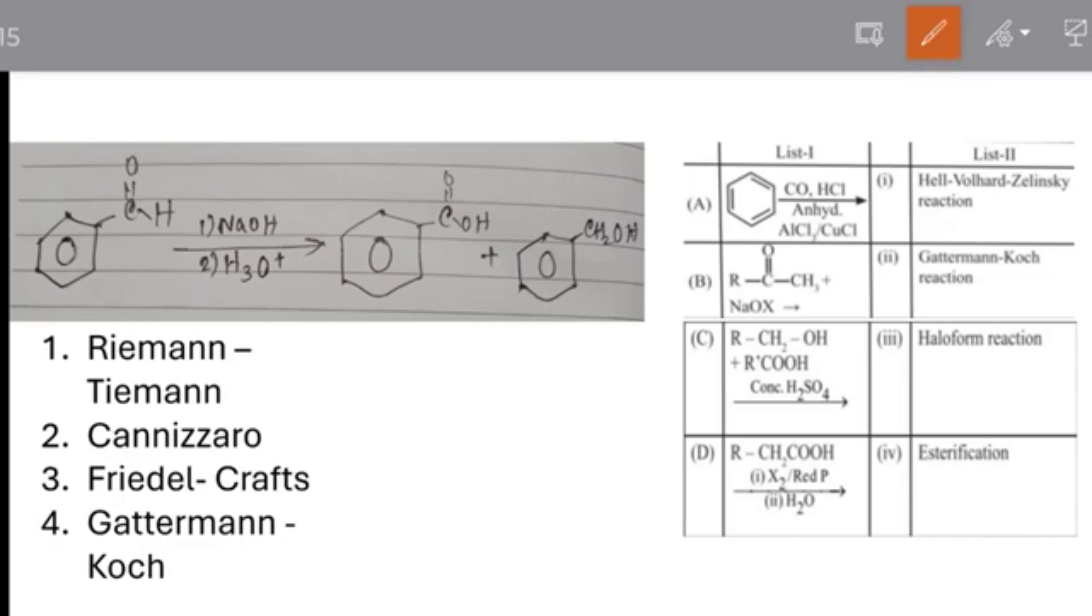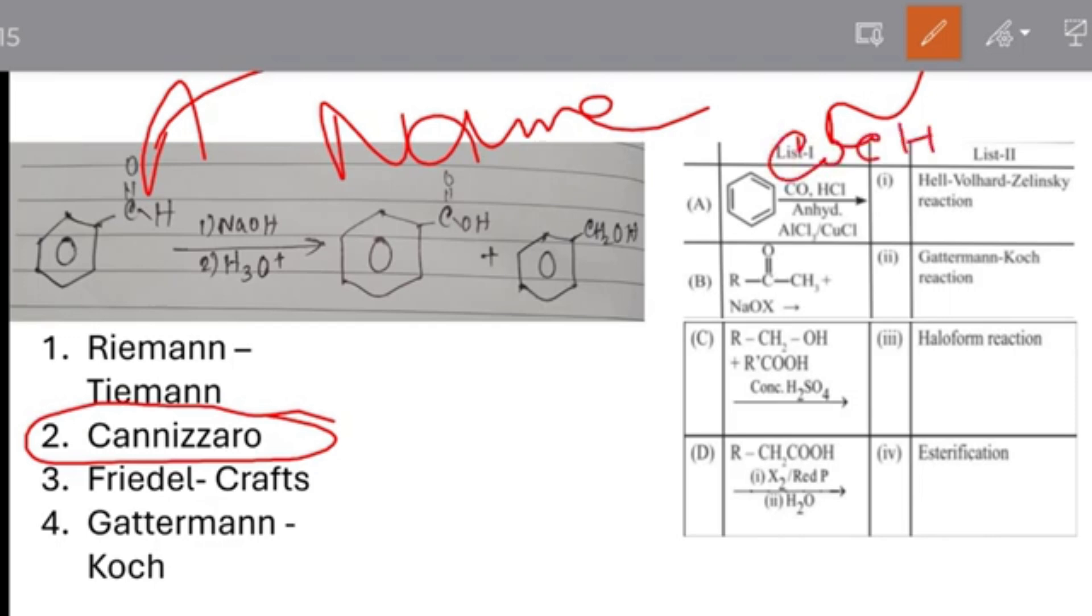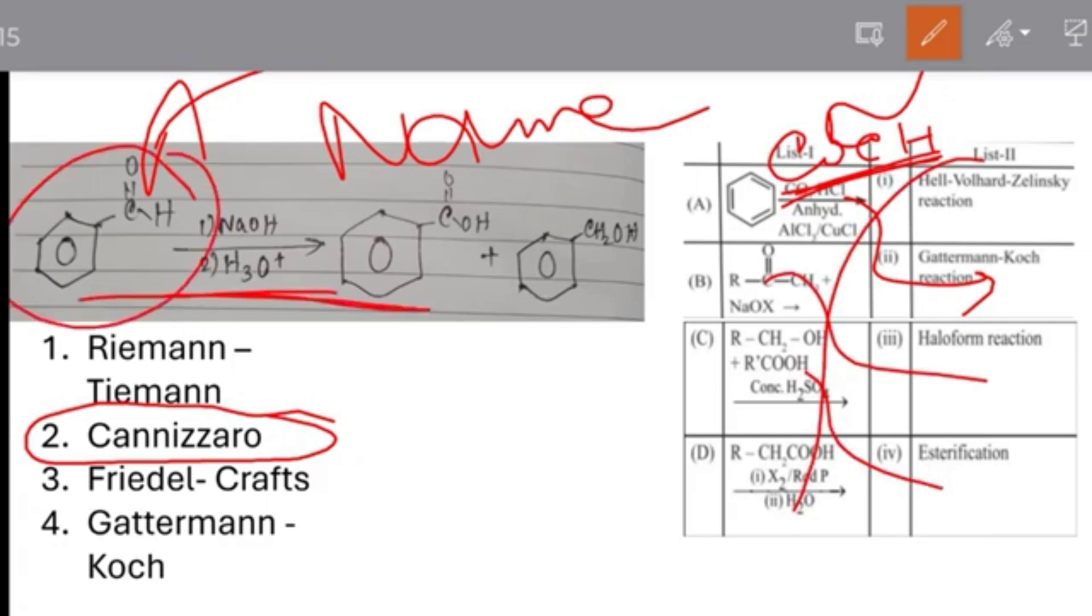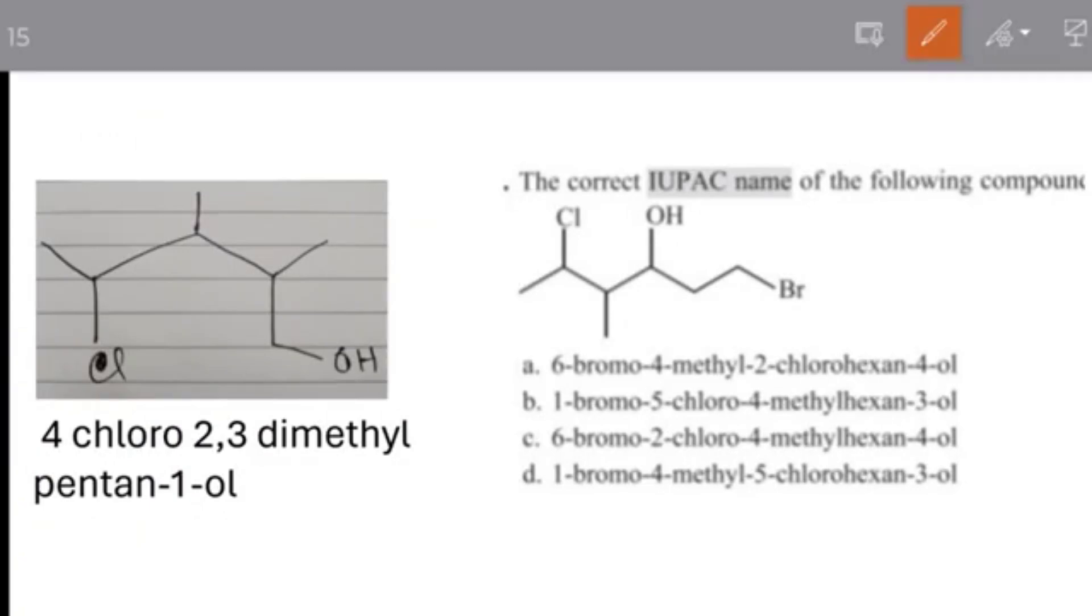See, this is a question - why name reactions are important. This is NEET PYQs, this is AIIMS Nursing PYQs, and this is a Cannizzaro reaction. Here also CO, HCl. See, CO and HCl. So, CO, CH and it is somewhat hearing like COCl. So, Gattermann-Koch reaction. This is Gattermann-Koch reaction. This is esterification. This is Hunsdiecker. This is haloform reaction. So this is a Cannizzaro reaction and the question is from aldehyde ketone. Why you need to solve the NEET PYQs? I think you are understanding.